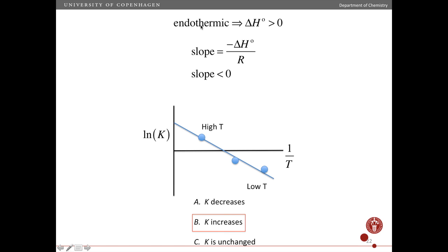If ΔH° is positive, that means the slope of my plot is negative. So the line has to go like this. And so that means that as the temperature increases, 1 over T decreases, and then my equilibrium constant increases.